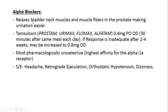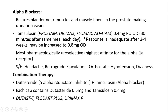Alpha blockers relax the bladder neck muscle and muscle fibers in the prostate, making urination easier. We generally use tamsulosin in this category because it is the most pharmacologically uroselective drug. Tamsulosin should be given 0.4 mg per oral once a day, 30 minutes after the same meal each day. If response is inadequate, the dose can be increased to 0.8 mg once a day after two to four weeks. Side effects include headache, retrograde ejaculation, orthostatic hypotension, and dizziness, so patients should be instructed not to get up from bed or sitting postures immediately and to drink plenty of fluids. Combination therapy uses a capsule containing dutasteride 0.5 mg and tamsulosin 0.4 mg.